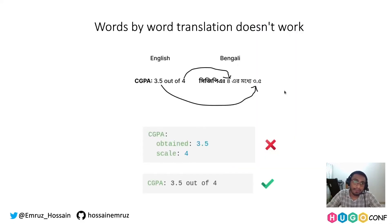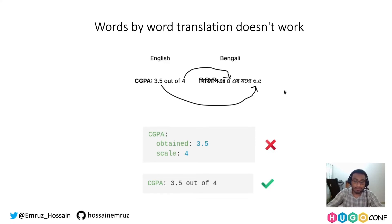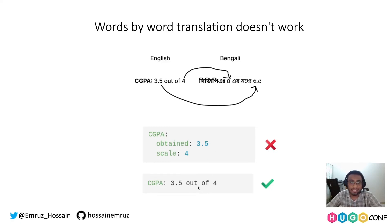Another thing I have learned is that word-by-word translation really does not work. Different languages have different sentence structures and word order may vary. So instead of taking individual parts as input, try to take the whole sentence as user input. If user input is not possible, then instead of trying to translate the sentence from individual words, try to translate the whole sentence at a time.